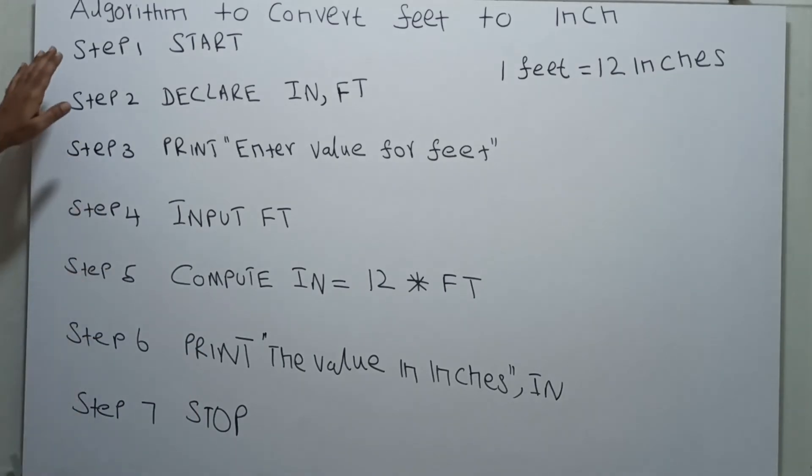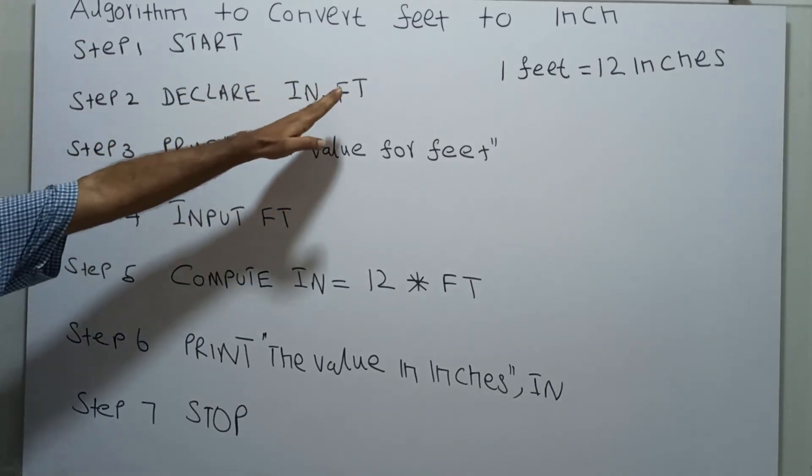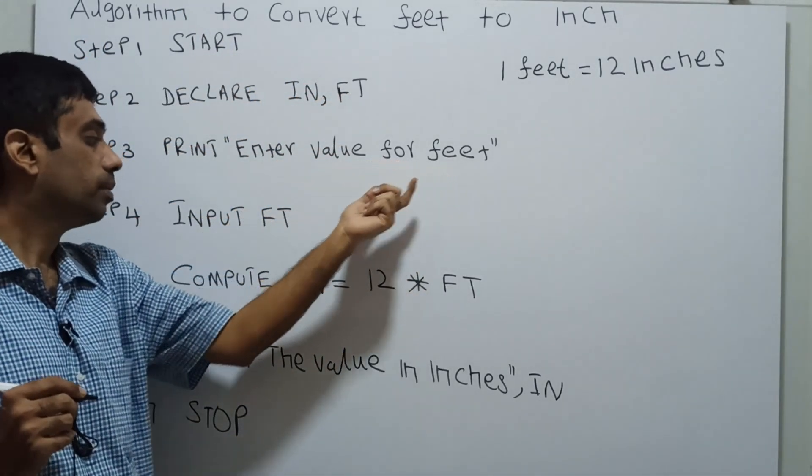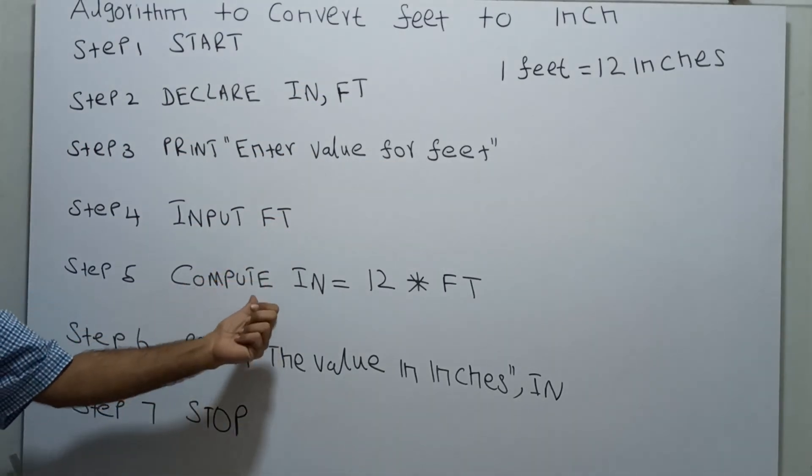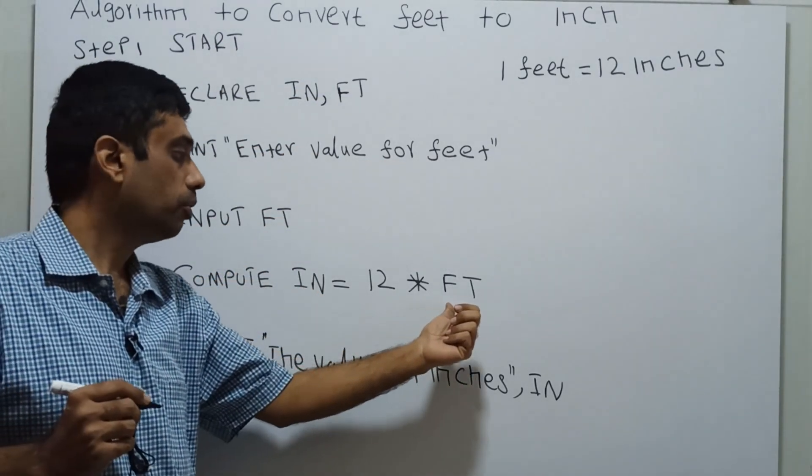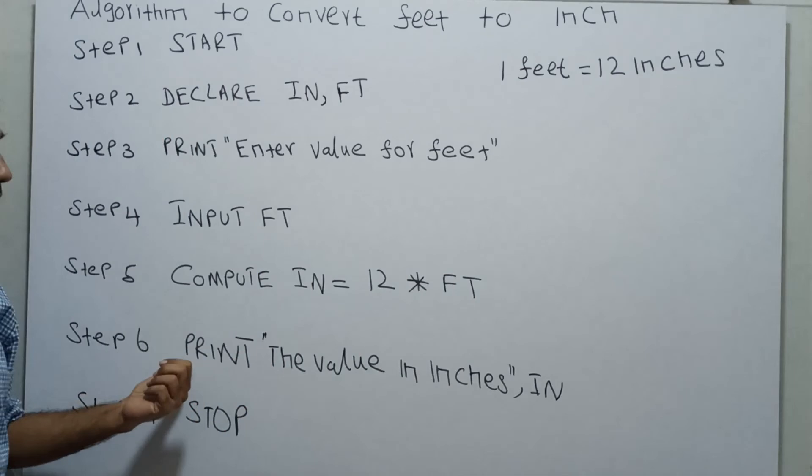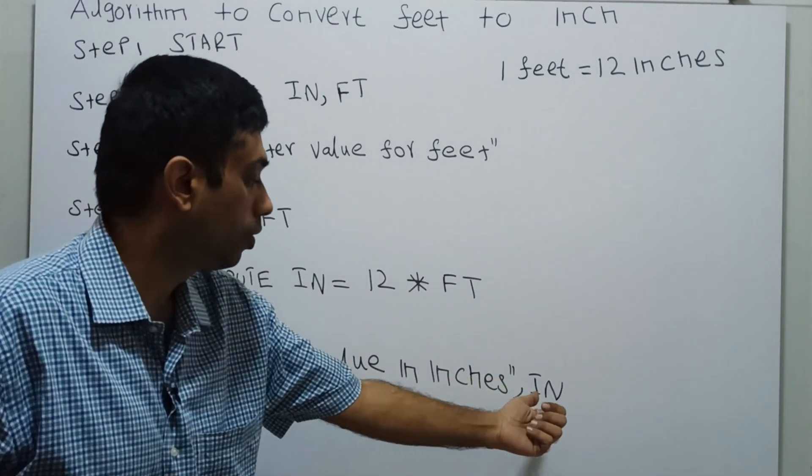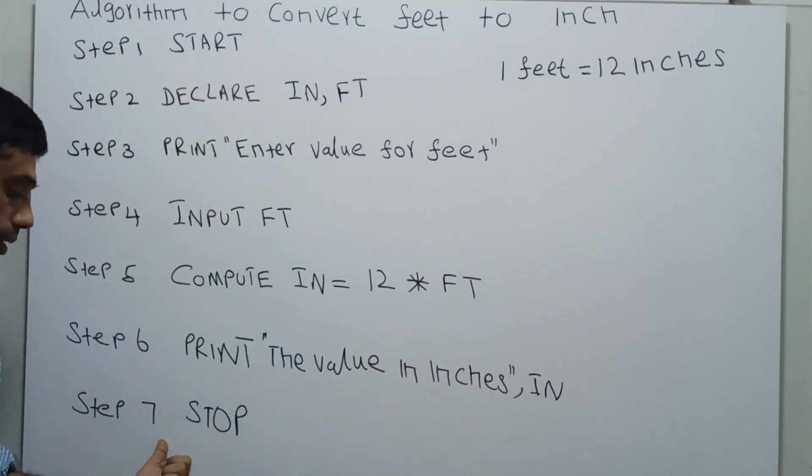So I declare two variables, I get the value from the user FT, I compute inch equal to 12 into feet, print the values in inches which is equal to inch, and this is the logical end of this algorithm.